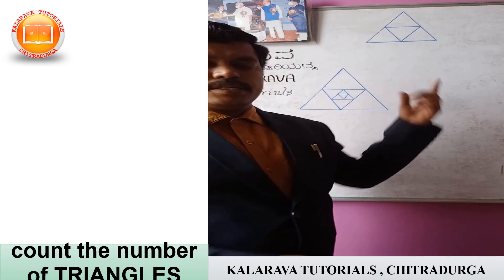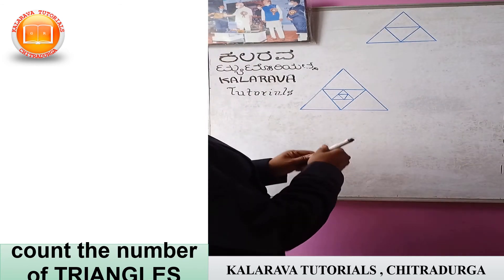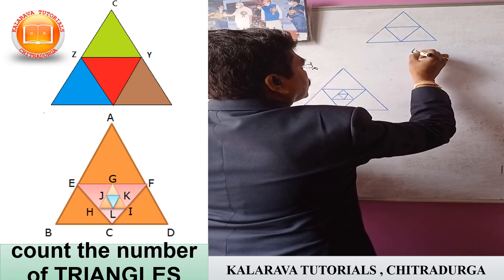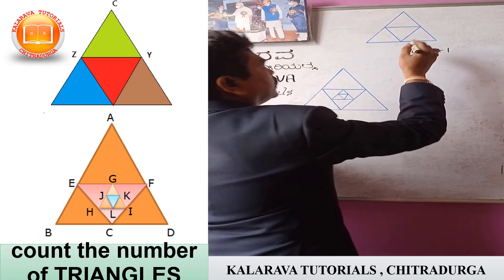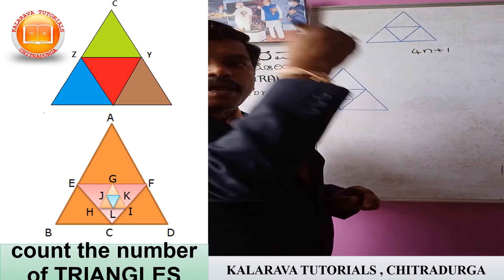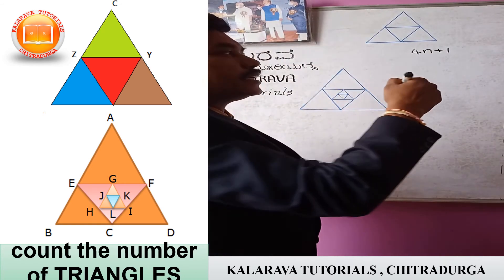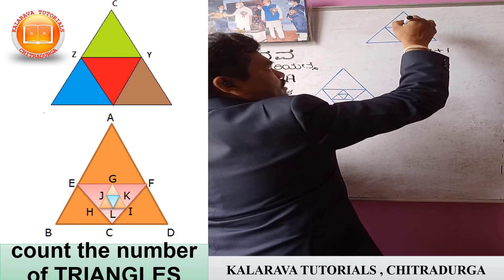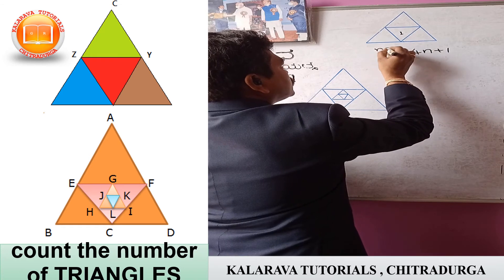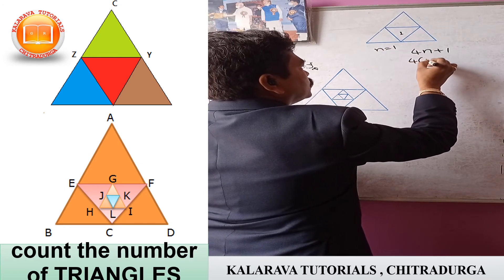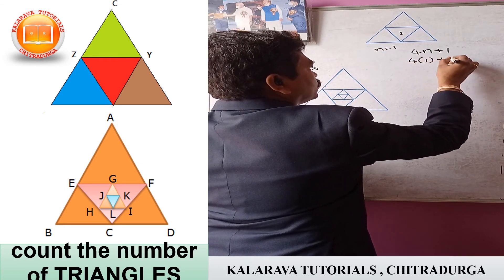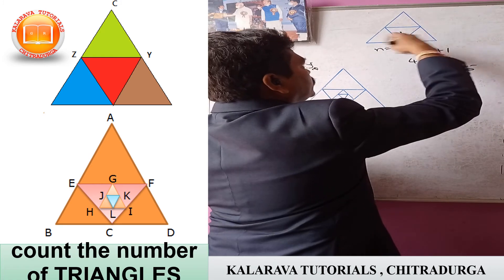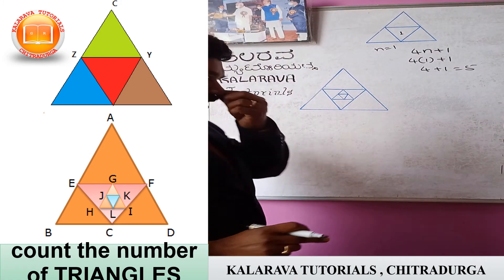Here we have to find out the number of triangles in this figure. For finding the number of triangles, we apply the formula 4n plus 1. That means the triangles embedded inside the triangle. Here there is only one triangle embedded inside, so n equals 1: 4 into 1 plus 1 equals 5. In this figure, there are 5 triangles.